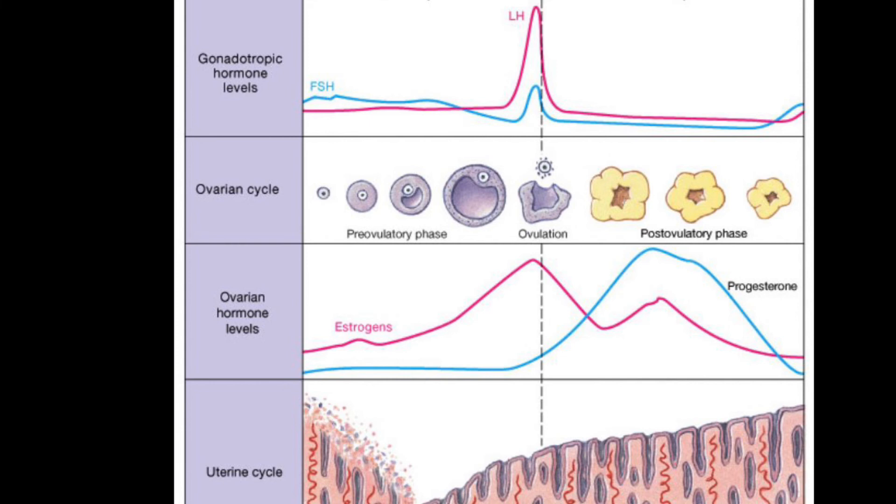As the estrogen levels rise, this triggers a mid-cycle surge in a second pituitary hormone called luteinizing hormone, which causes the follicles to rupture by the process called ovulation.